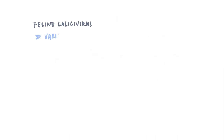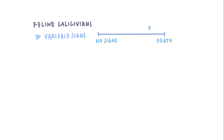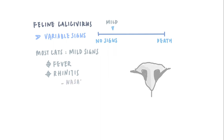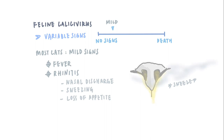Feline calicivirus can cause extremely variable signs, from causing no signs at all to causing death in some really bad cases. Most cats with feline calicivirus will just have mild signs like fever and rhinitis. Signs of rhinitis include nasal discharge, sneezing, loss of appetite — because their noses are blocked and they can't smell food anymore — and decreased airflow, so sometimes they'll have to breathe through their mouths.